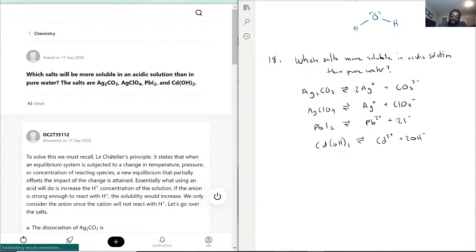It says which of these will be more soluble in acidic solution. Acidic solution has lots of H₃O⁺ floating around. With that being said, we can look at these equations and figure out what would happen.